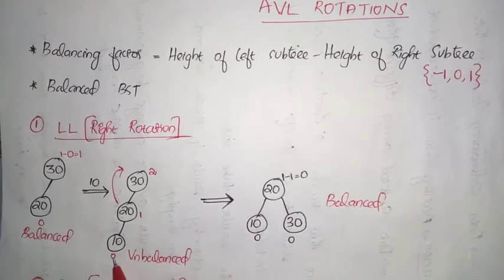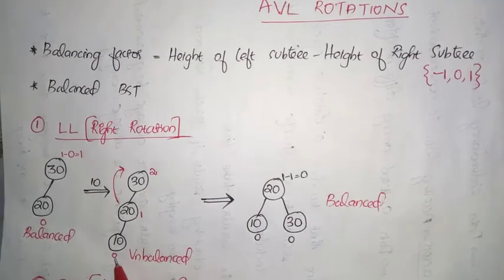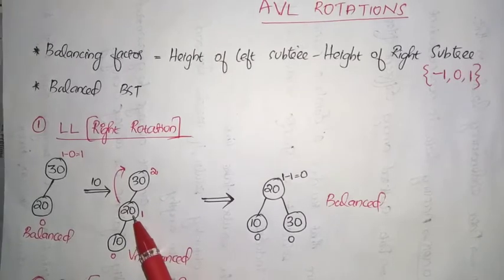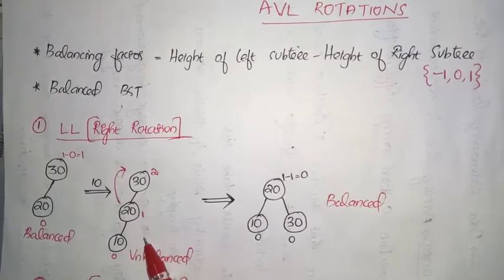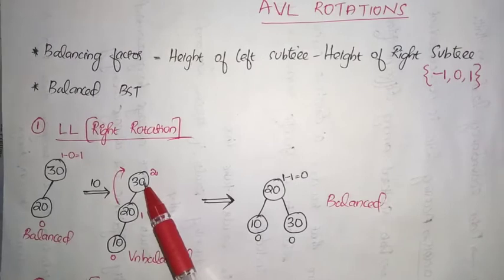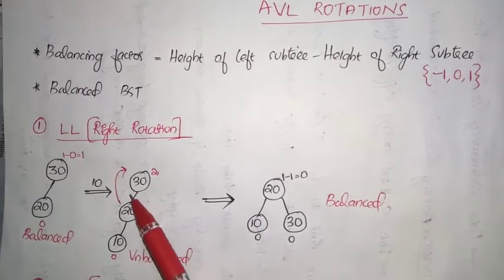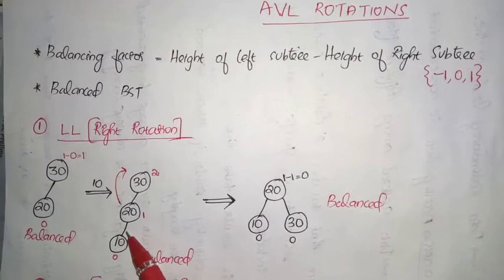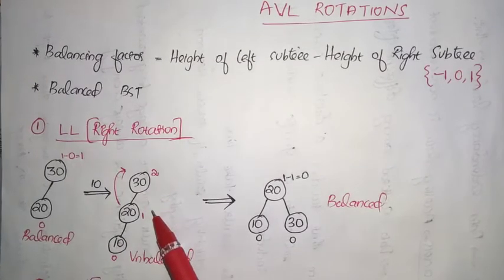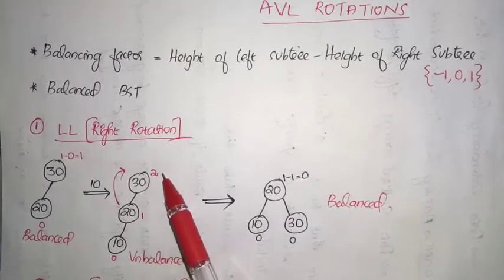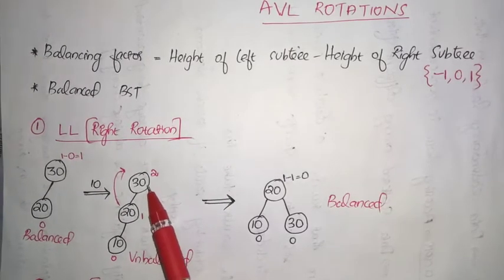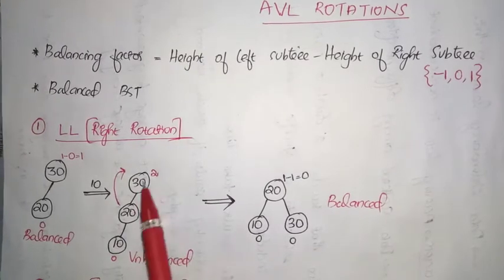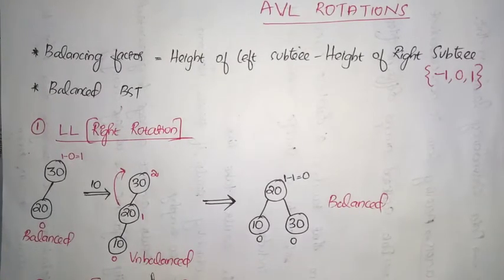The balancing factor of the leaf node is 0. The balancing factor of node 20 is height of left subtree 1 minus height of right subtree 0, which is 1. The balancing factor of node 30 is height of left subtree 2 minus height of right subtree 0, which gives 2. Since the balancing factor of this node became 2, this tree is now an unbalanced tree.